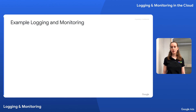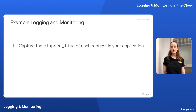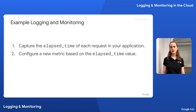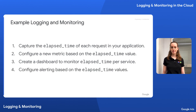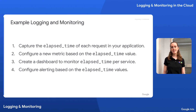Before we wrap up, let's walk through a complete example to tie it all together. First, let's say we decide to capture elapsed time and send it to the cloud using one of the options we discussed. Next, within our cloud solution, we can configure a metric based on that elapsed time value. Once we have that metric, we can create a dashboard to understand our application performance through elapsed time — for instance, calculating average elapsed time per request broken down by service. Lastly, we can configure alerting to notify us when the average elapsed time for a particular service is abnormally high. This could use a pre-configured threshold or, depending on your tooling, anomaly detection. Stay tuned for future episodes, where we'll see this example in action.